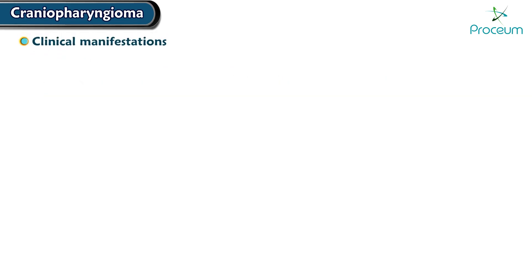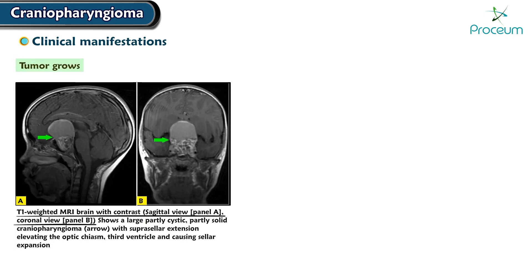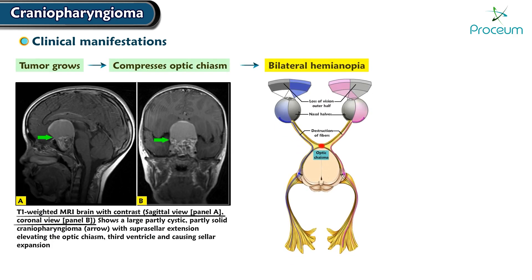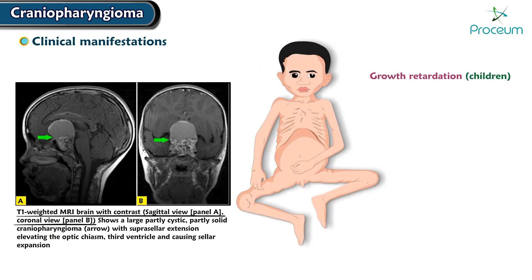As the tumor grows, it compresses the optic chiasm, resulting in bilateral hemianopia, and causes headache. These tumors can also cause growth retardation in children by interfering with normal pituitary function, leading to hypopituitarism.